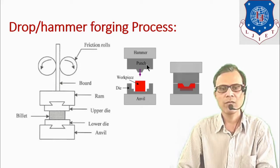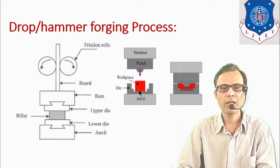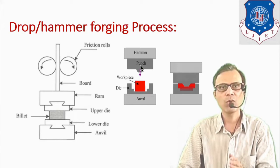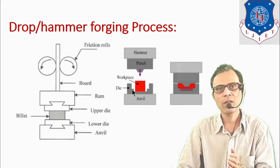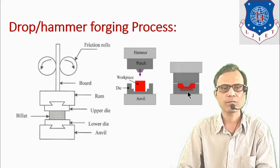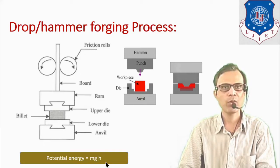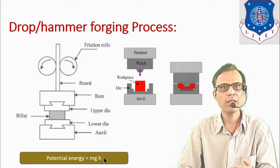The punch has the half shape of the required product, and the die also has the half shape of the required product. The workpiece is placed between the die and punch. When the punch meets the lower die, the required product is formed. The energy possessed by the gravity hammer is given by the equation MGH, which is potential energy. This potential energy is a function of height, so the required energy level can be increased or decreased by adjusting the height.